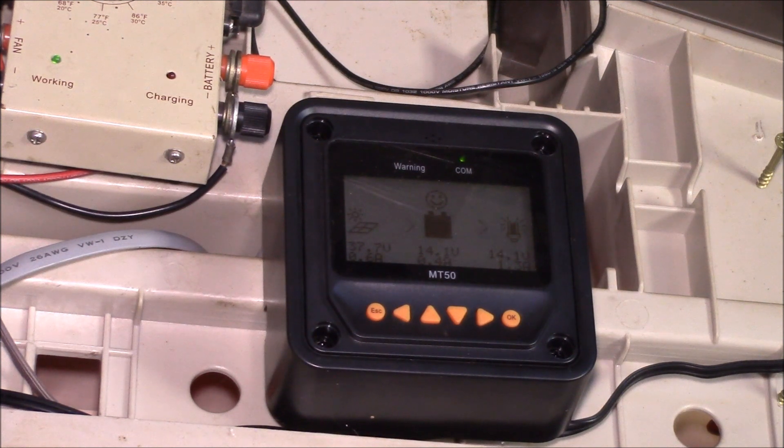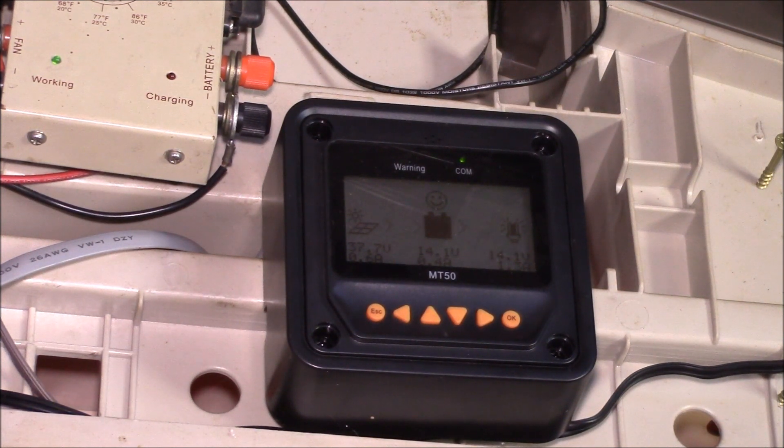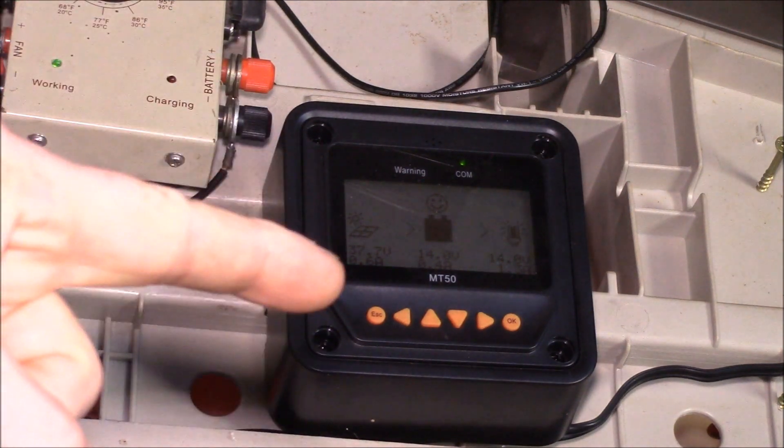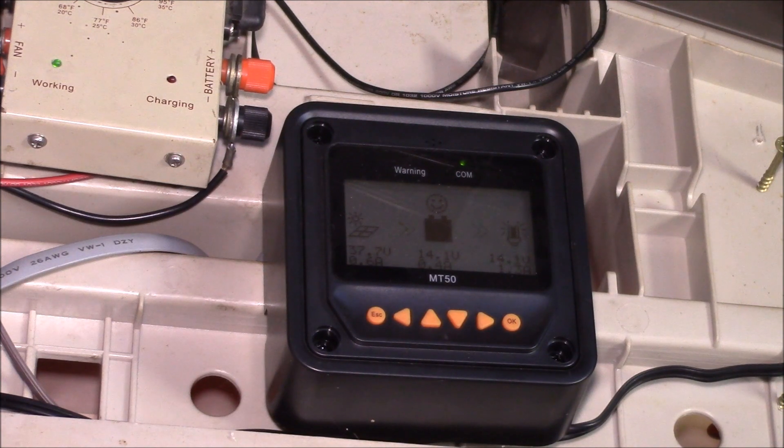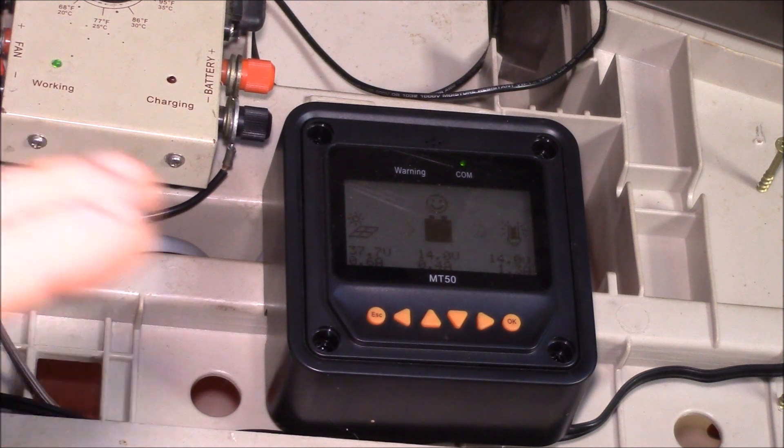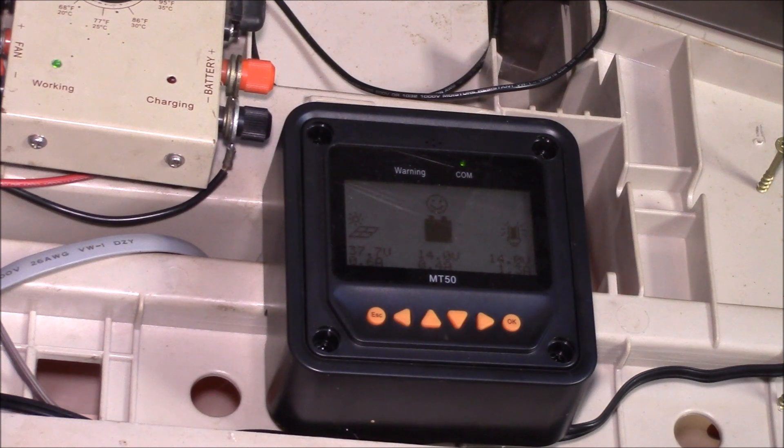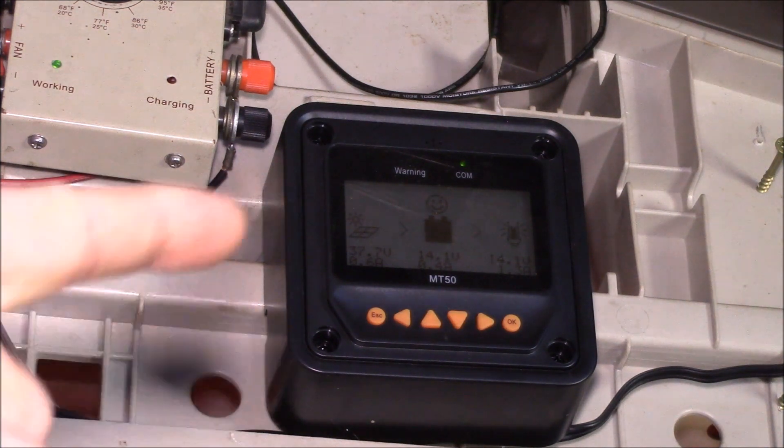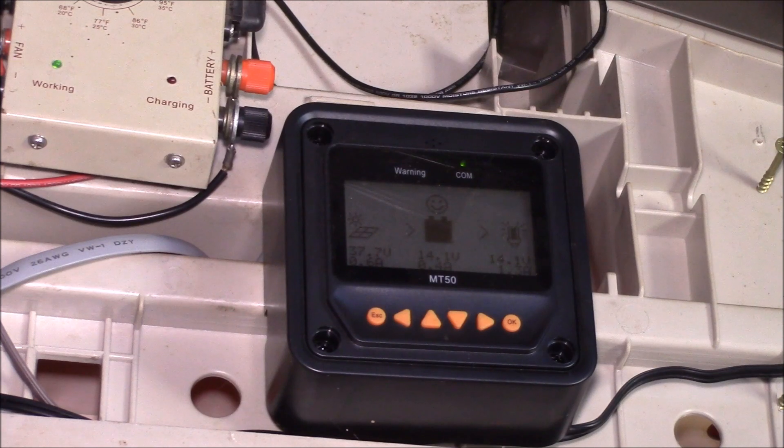You can see I'm getting like 37-38 volts on the solar panels, charging the batteries at 14.1 volts. I've had several viewers ask how do you change the battery charging parameters using this remote display. I did a video a couple years ago where I showed changing the parameters using the Solar Station Monitor program on a PC. Today I'll show you how to do that on this controller without plugging a PC in.